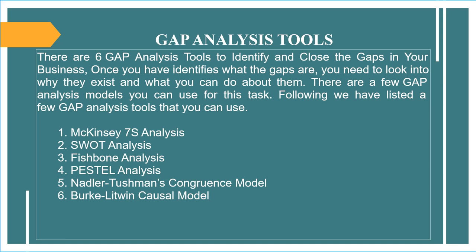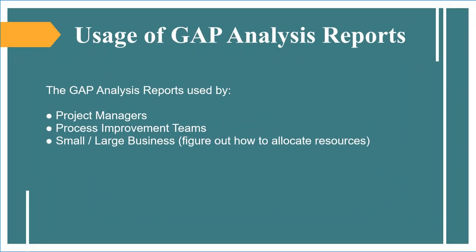Following are the six gap analysis tools you can use: 1. McKinsey 7S analysis, 2. SWOT analysis, 3. Fishbone analysis, 4. PESTEL analysis, 5. Nadler-Tushman's congruence model, 6. Burke-Litwin causal model. These gap analysis reports are used by project managers, process improvement teams, and small or large businesses to figure out how to allocate resources for better management.